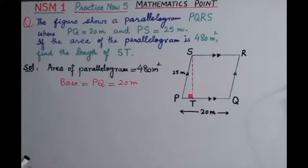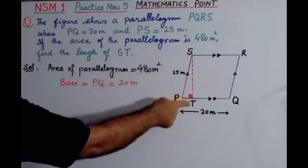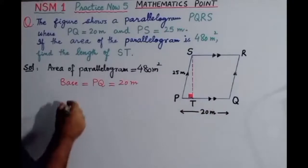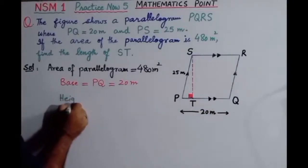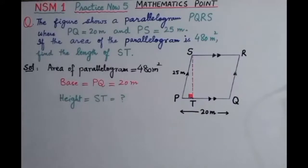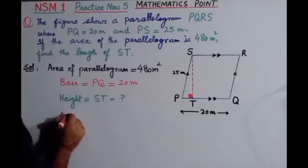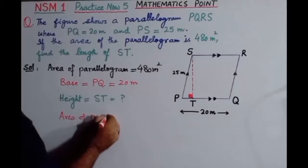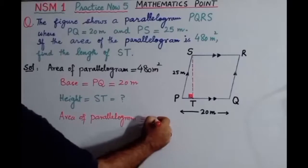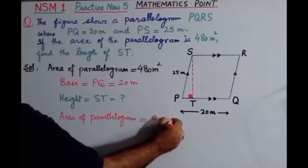The next thing is that ST is the height. Since PQ is the base, ST is the perpendicular that falls on this base, so ST is the height. We have to find the length of ST. The formula for the area of a parallelogram is: Area = base × height.